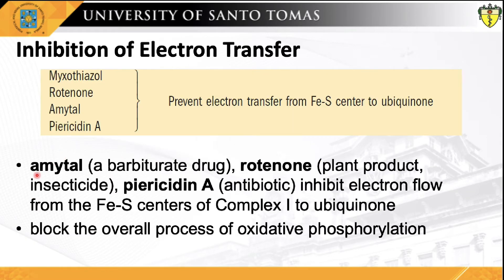The next group of poisons shares a similar mechanism of action in disrupting the electron transport chain. Amytal, a barbiturate drug, rotenone, a plant product commonly used as an insecticide, and piericidin A, an antibiotic, all inhibit electron flow from the iron-sulfur centers of complex I to ubiquinone, blocking the overall process of oxidative phosphorylation. Because they only block electron flow from complex I to ubiquinone, complex II is unimpeded. Therefore, no ATP is formed from NADH; however, two ATPs can be formed per mole of FADH2 that enters via complex II.